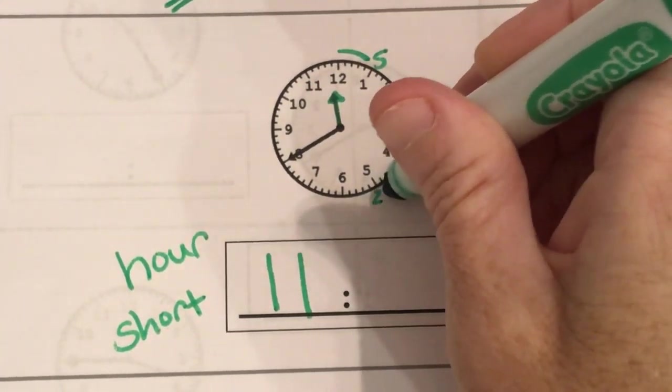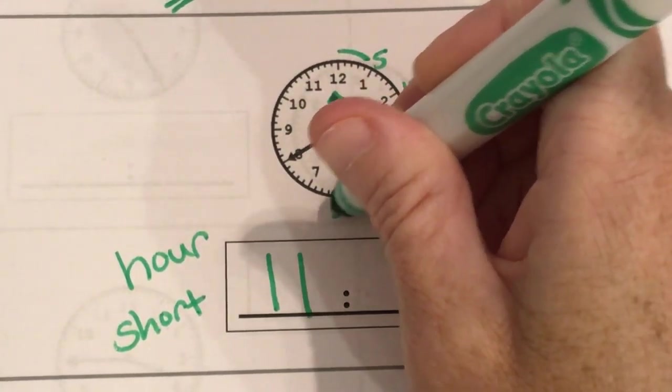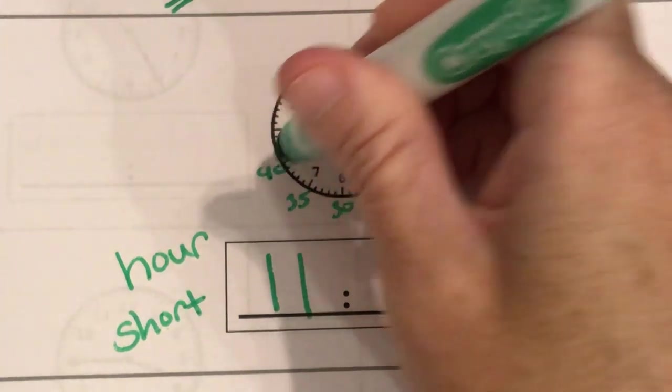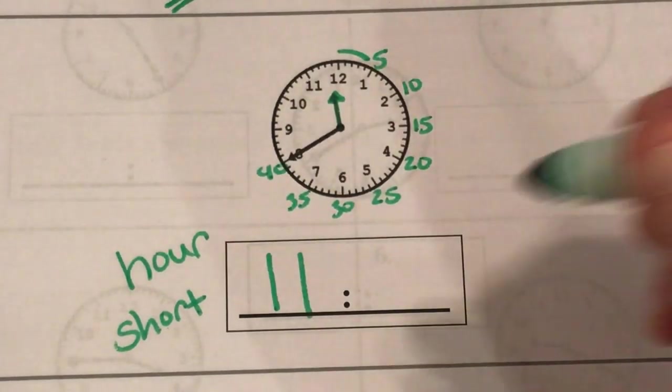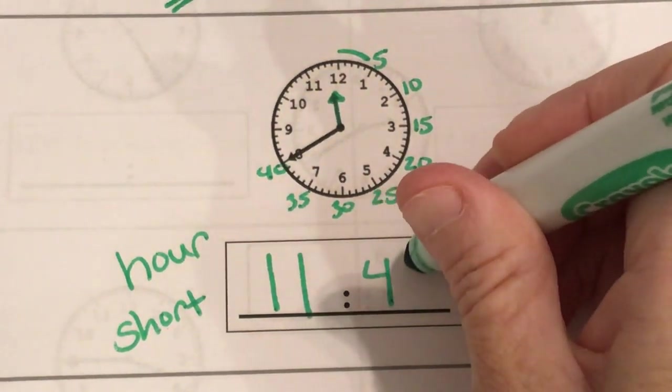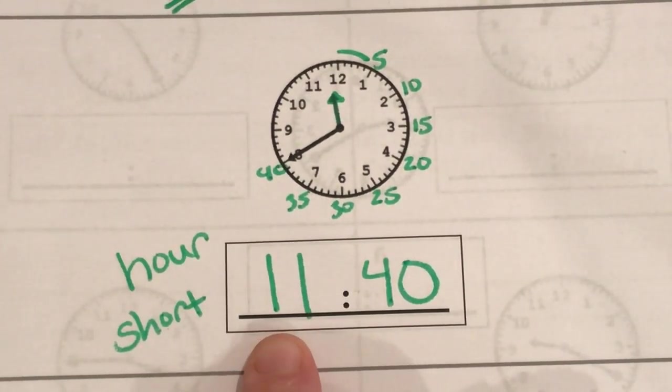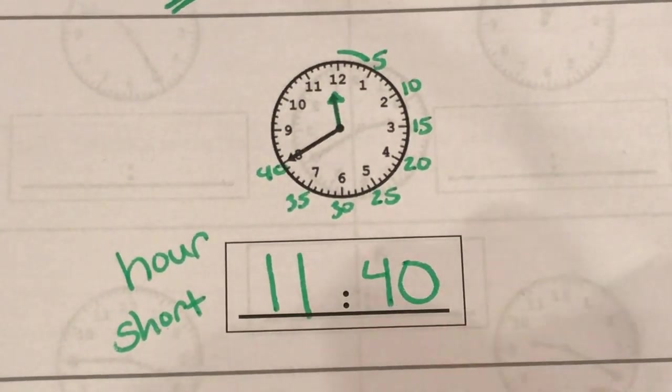20, 25, 30, 35, and 40. So our minute hand tells us it's 40 minutes. So now when we read our time together it's 11:40. That's how we're going to say that: 11:40.